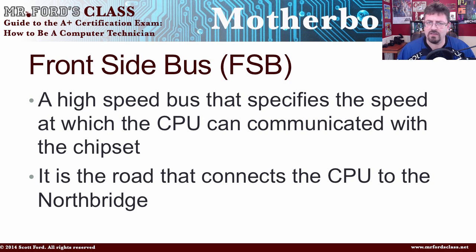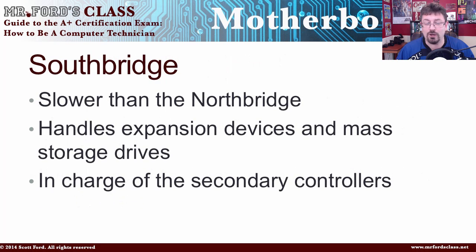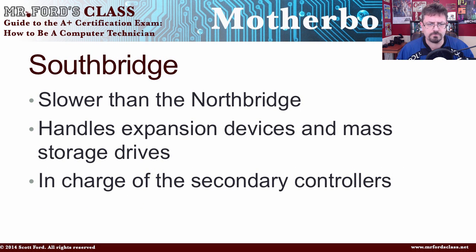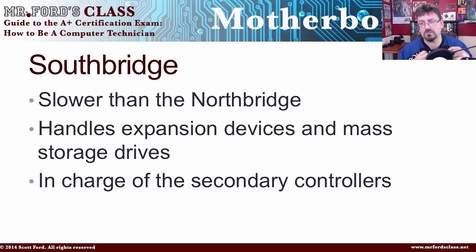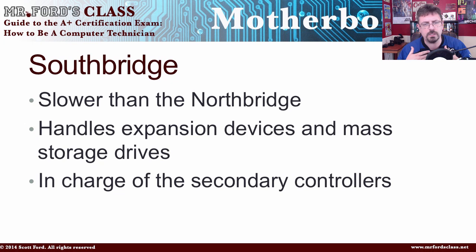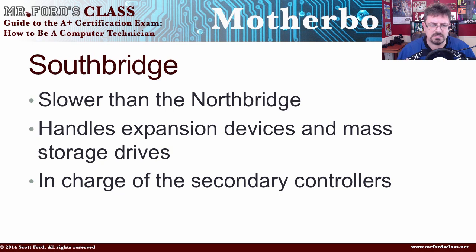If we have a fast lane, then we have to have the rural roads — and in this case, that would be the South Bridge. It's slower than the North Bridge, and it handles expansion devices and mass storage devices. The hard drive doesn't go as fast as the CPU — compared to the CPU, the hard drive is driving a little horse and buggy. It doesn't need that fast of a highway because it still takes time to retrieve information off the hard drive, so it can handle a slower lane. The South Bridge handles expansion devices, mass storage devices, and is in charge of secondary controllers — for example, SATA, USB, and even more.